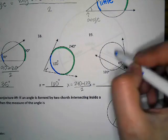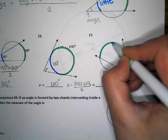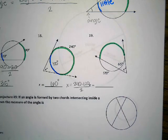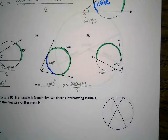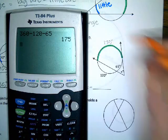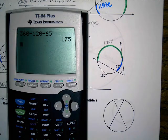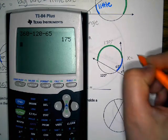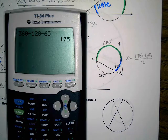In this problem, they gave us two pieces of information, but one of the pieces isn't what we needed. We do 360 minus 120 minus 65 because we have to find this arc over here and we don't have it. So 360 minus 120 minus 65 - this arc is 175. The angle equals big arc minus little arc divided by two: 175 minus 65 is 110, and 110 divided by two is 55.